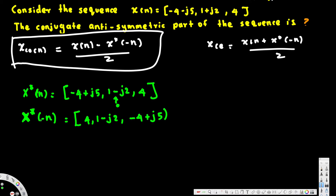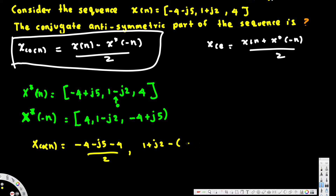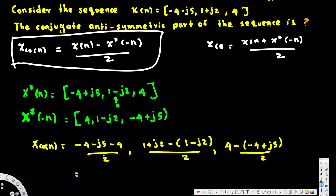Now we have all variables: x(n) and x*(-n). Plugging into the formula: first element is (-4-j5) minus 4, divided by 2; second element is (1+j2) minus (1-j2), divided by 2; third element is 4 minus (-4+j5), divided by 2.